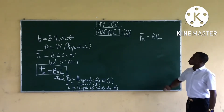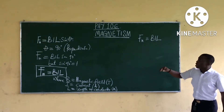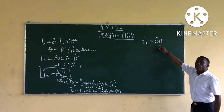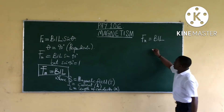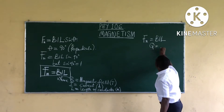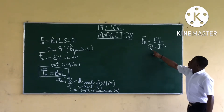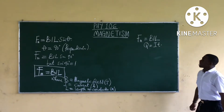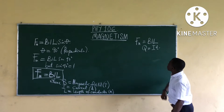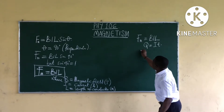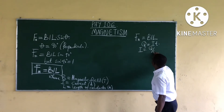Now, if this magnetic force is not on a wire but on an electron, we don't use F = BIL. Instead, we use the relationship that charge Q equals current times time, so I = Q over T.